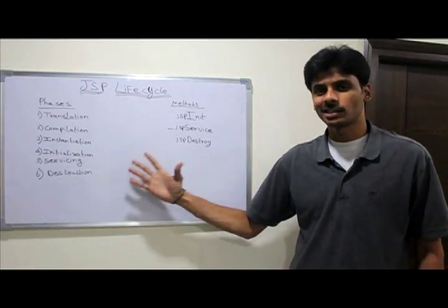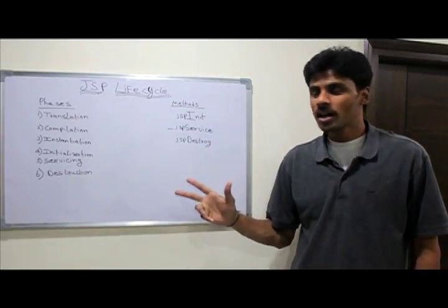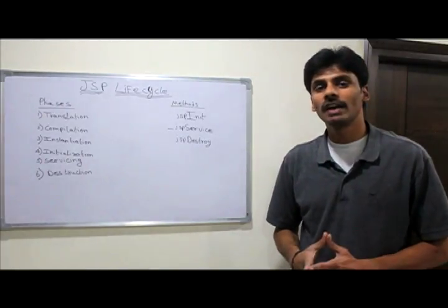Under the life cycle phases, although there are six phases, only two of them are new because the rest four are the same phases that a servlet has.